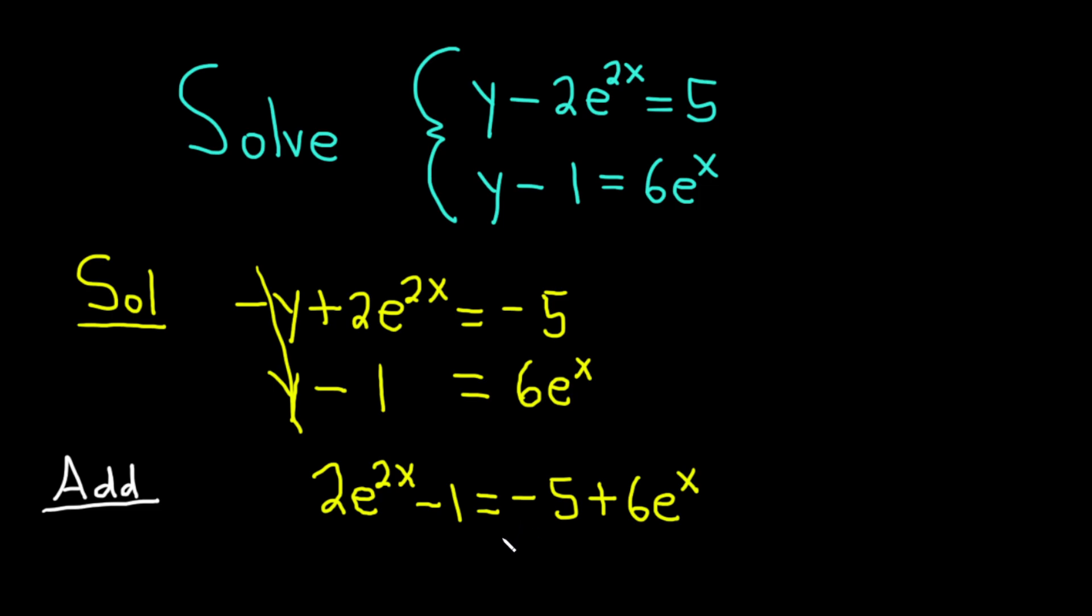So at this point, what we want to do is we want to get everything on one side by itself. And this is actually going to become a quadratic equation. So we're going to subtract 6e to the x and add 5. So I'm just going to do it and write it. So we have 2e to the 2x. And now we're going to subtract 6e to the x from both sides. So it'll come over here, minus 6e to the x.